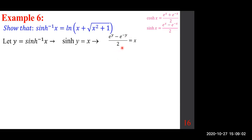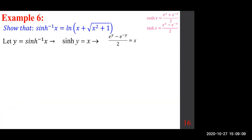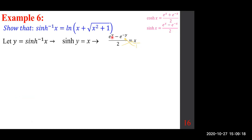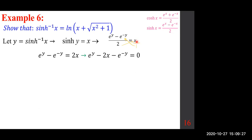We bring everything to one side by moving 2x over, giving us e^y − e^(−y) − 2x = 0. Remember, we want to solve for y, since y = sinh⁻¹(x). To solve this equation, we multiply both sides by e^y to eliminate the negative exponent.